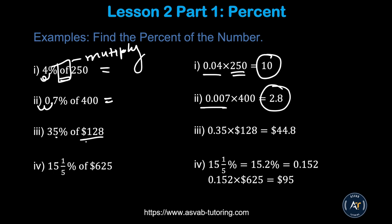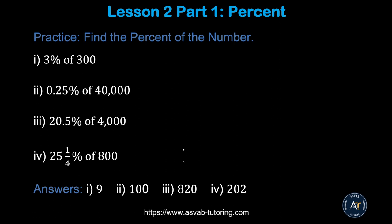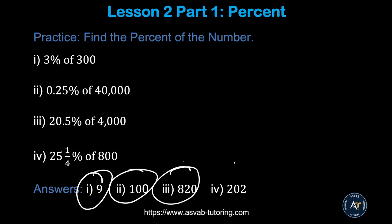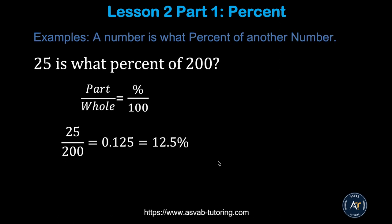For 35 percent of 120, do exactly the same way — you get 42. And 95 percent works the same way. Here are some practice problems — try them yourself and make sure you get the correct answers. If you do, that means you're learning.